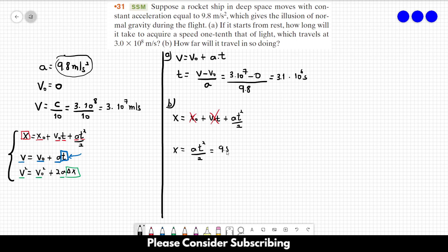The acceleration is 9.8, t is 3.1 times 10 to the 6, squared, divided by 2. If you do this calculation, you get 4.6 times 10 to the 13 meters. This is the answer to part B.